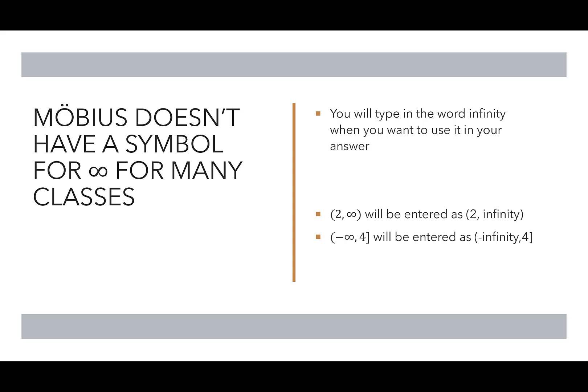So for example, if I had this open interval, 2 to infinity, I would enter parentheses 2 comma infinity close parentheses. If I had something like negative infinity to 4, where it's including the 4, I would enter it as open parentheses, negative sign, the word infinity comma 4, close bracket.